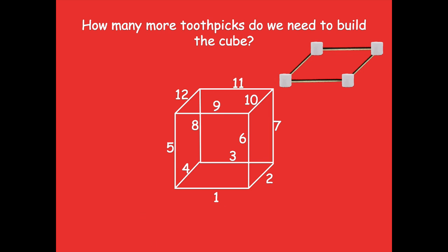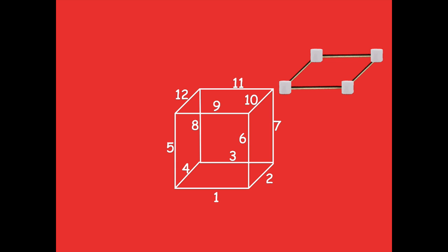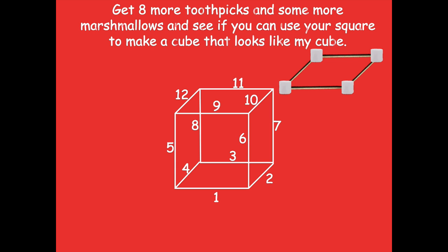We have twelve edges total and we already have four in our square, so twelve minus four is eight. We need eight more toothpicks. Get eight more toothpicks and some more marshmallows, or whatever sticky material you're using, and see if you can use your square to make a cube that looks like mine.